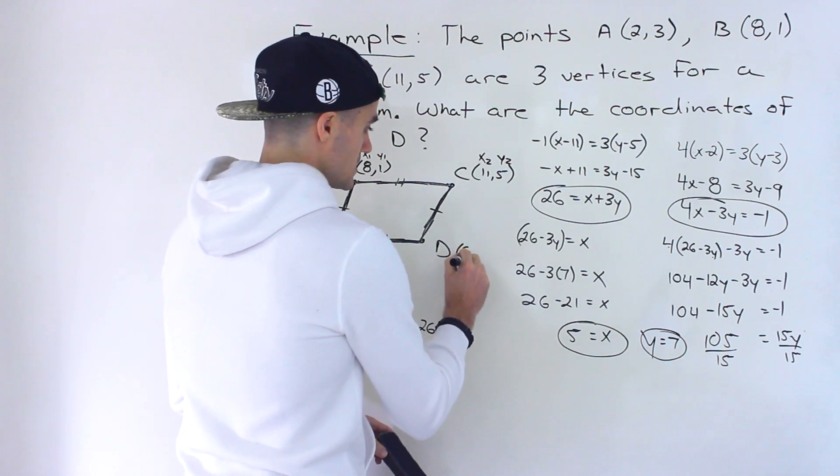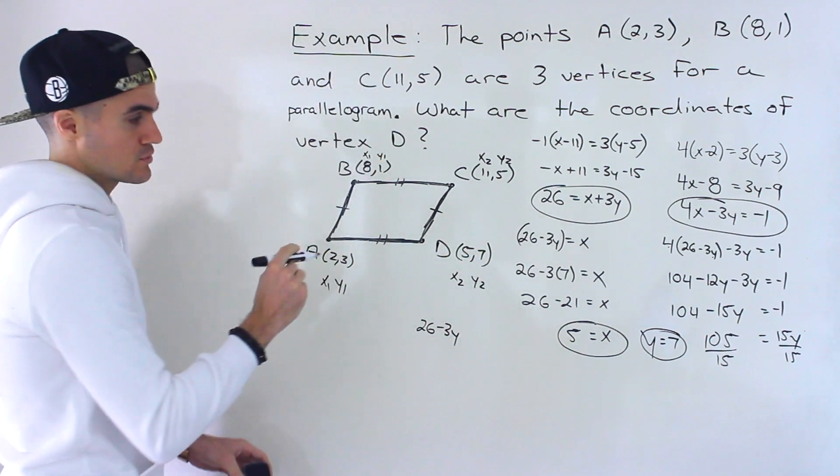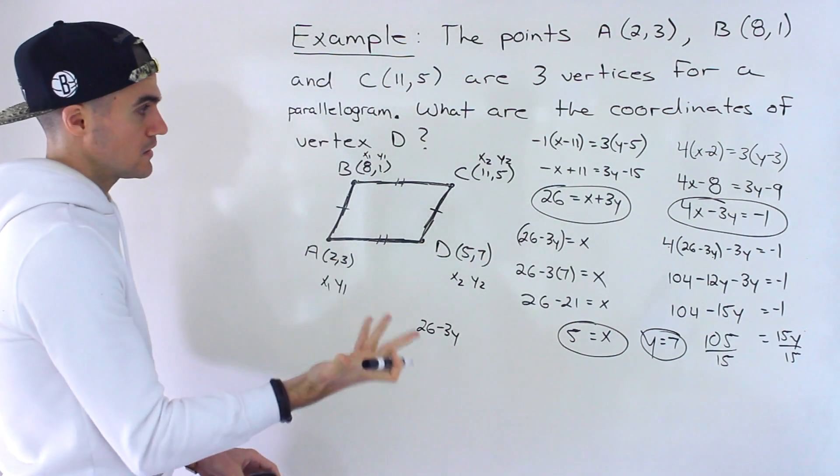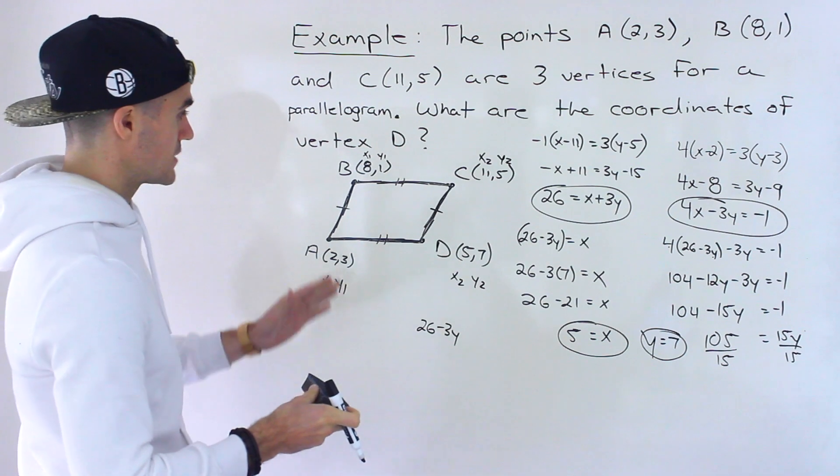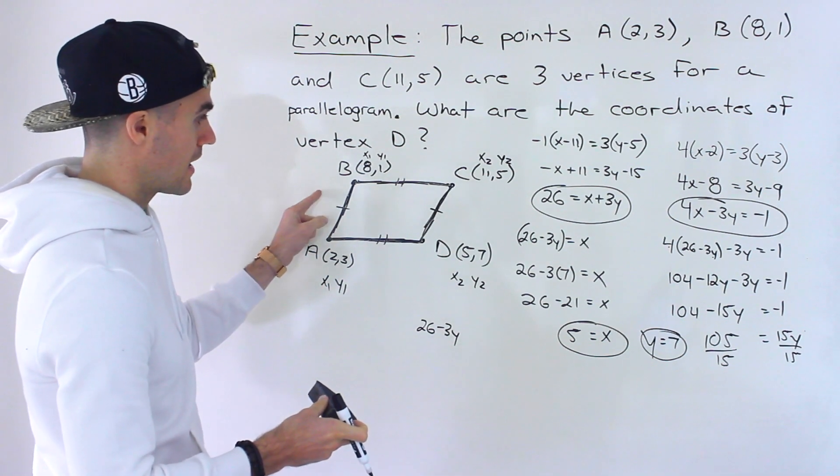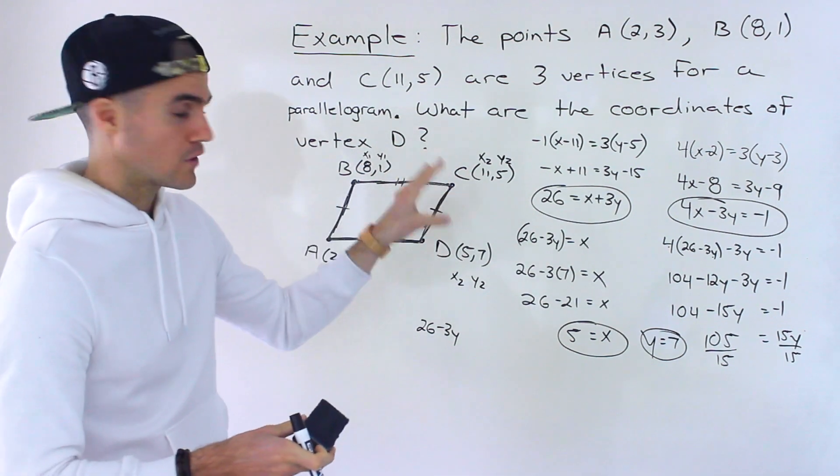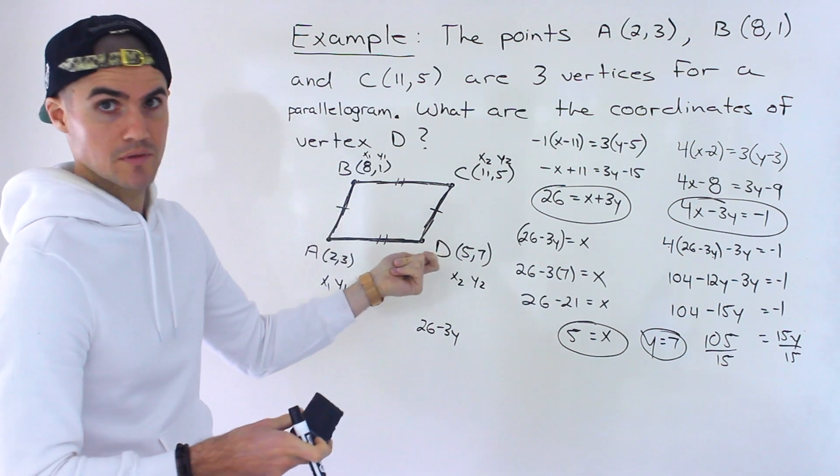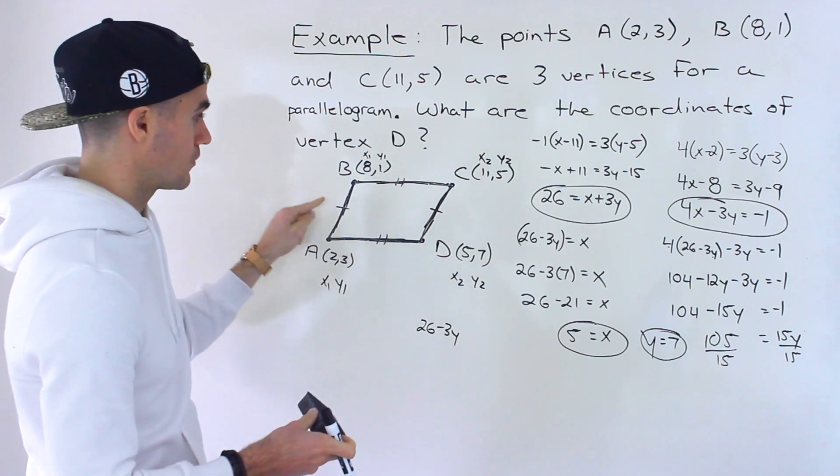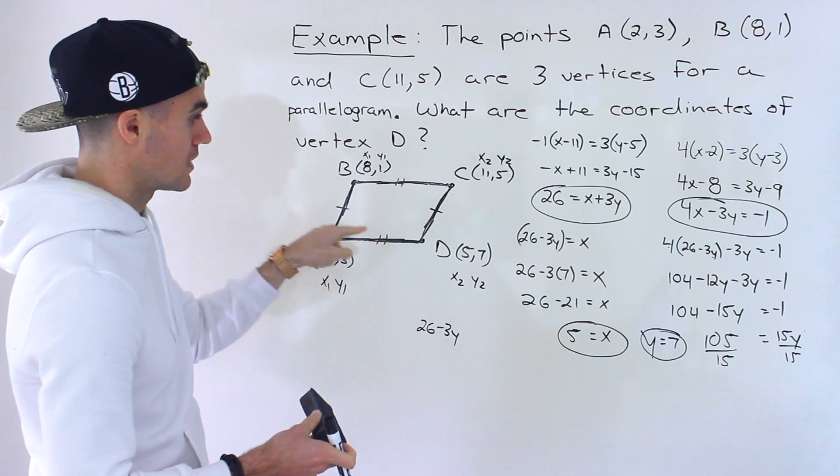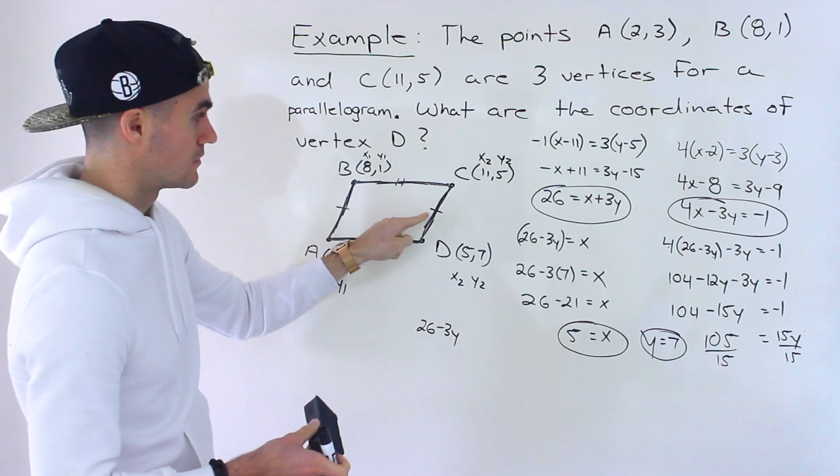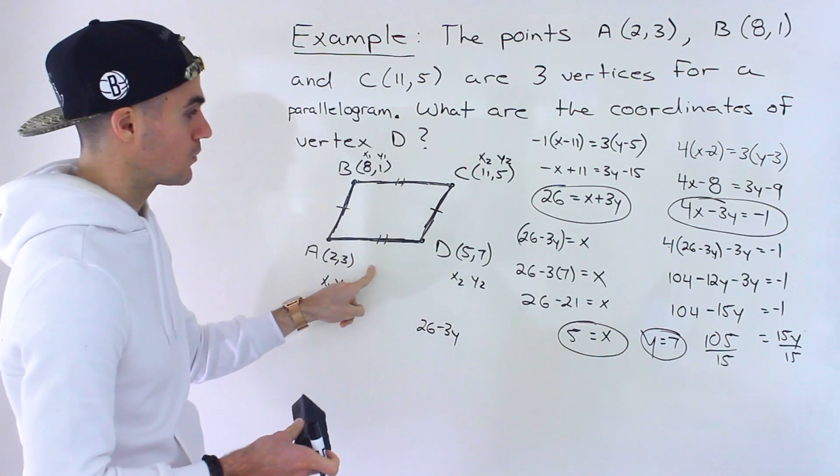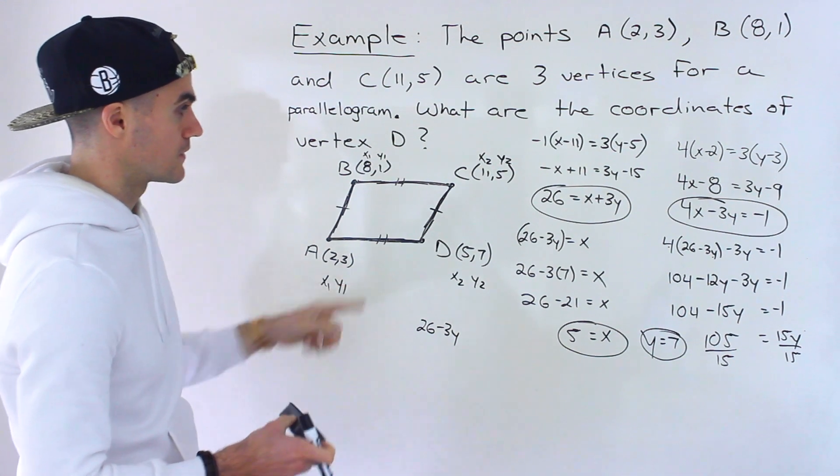Now at this point, sometimes they may ask you to check your answer. And the way you can check your answer is by going through the steps that we've gone through where we have to confirm something's a parallelogram. And the way we do that is we find all four slopes and make sure that the pairs are equal. That's how you can verify your solution.